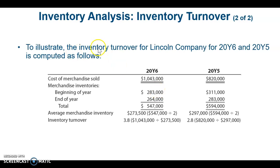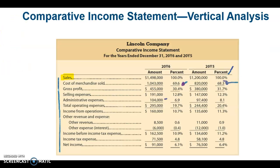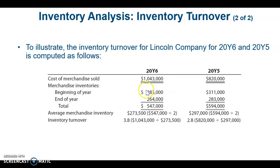Here we're calculating inventory turnover for Lincoln Company. The cost of merchandise sold — that 1,043,000 — comes from the income statement for 2016, and the 2015 figure is there as well. The average inventory has already been calculated. Dividing cost of merchandise sold by average inventory gives us 3.8 for 2016 and 2.8 for 2015.